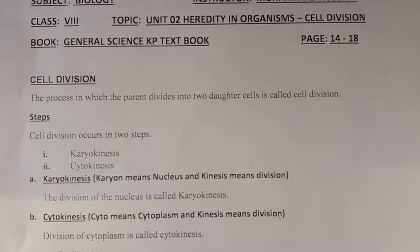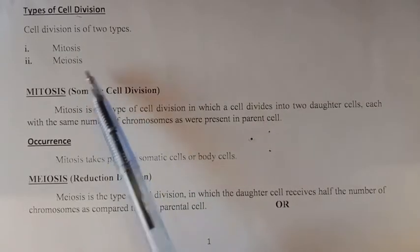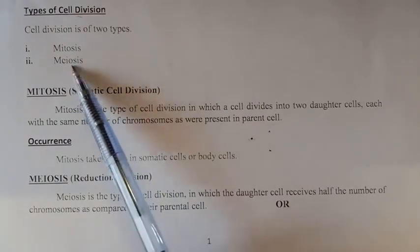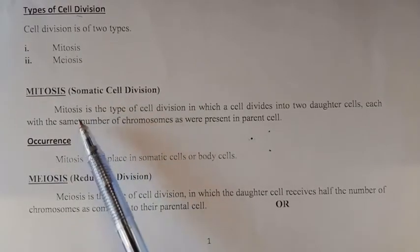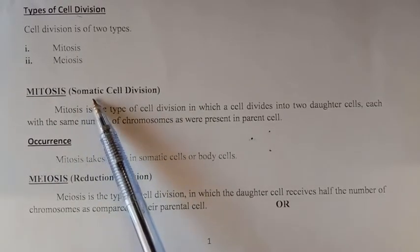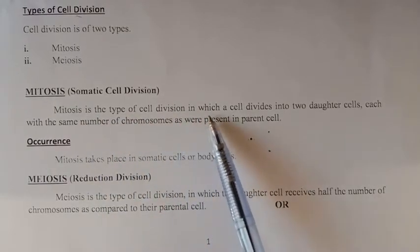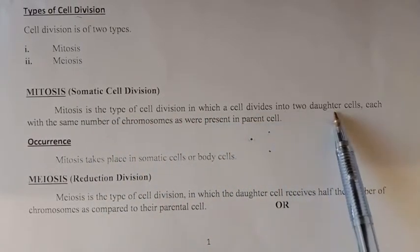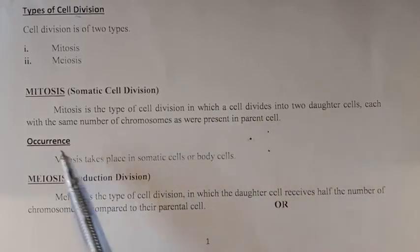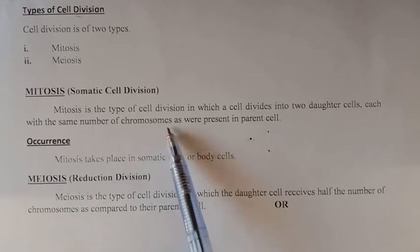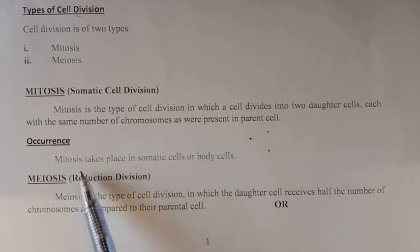There are two types of cell division: mitosis and meiosis. First, mitosis — also called somatic cell division, since somatic means body cell. Mitosis is the type of cell division in which the parent cell divides into two daughter cells, each with the same number of chromosomes as present in the parent cell.